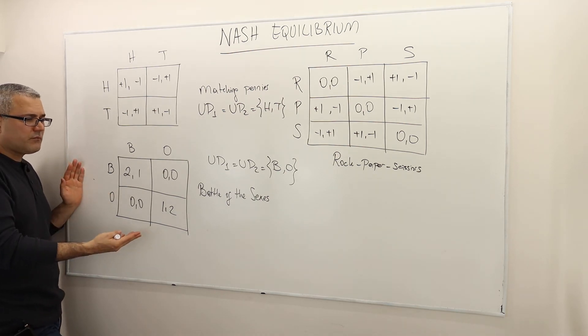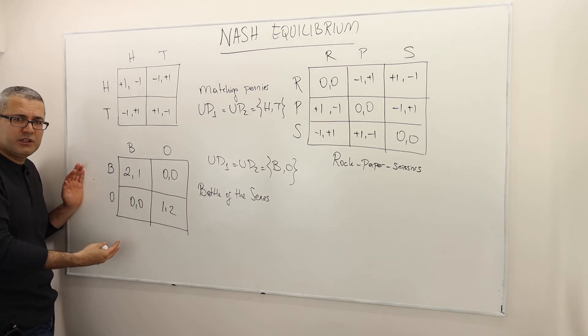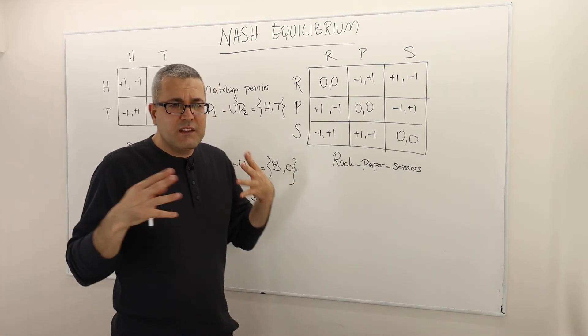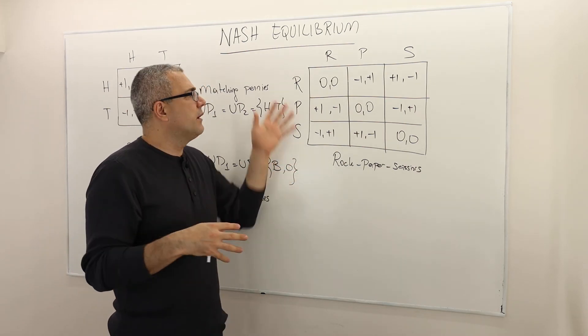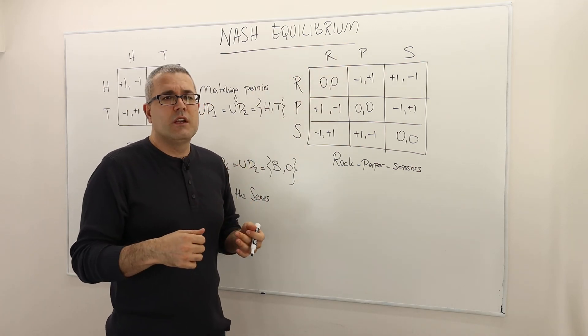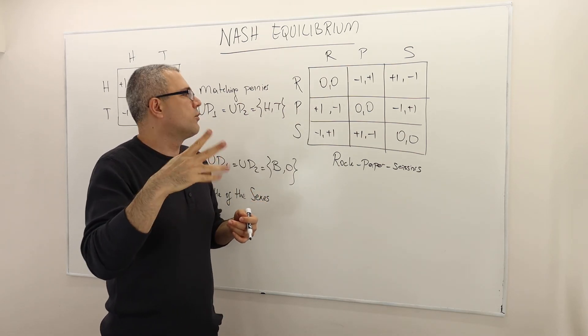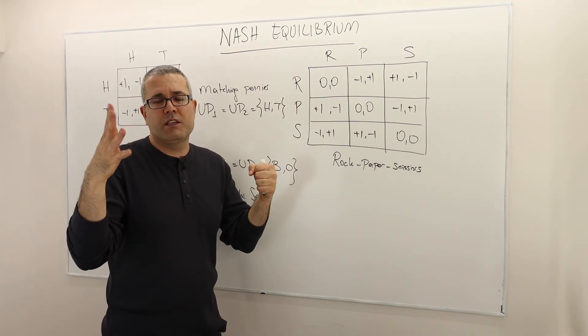And once again, if somebody asks how the rational players play this game, your solution, your your your your comments to this question is going to be, I have no idea because everything is possible. Everything is rational here. And finally, the rock, paper, scissors game. This is a standard game, right? So each player is playing this game, two players playing this game simultaneously. So you basically choose sort of a hand gesture. You either choose rock or paper or scissors.